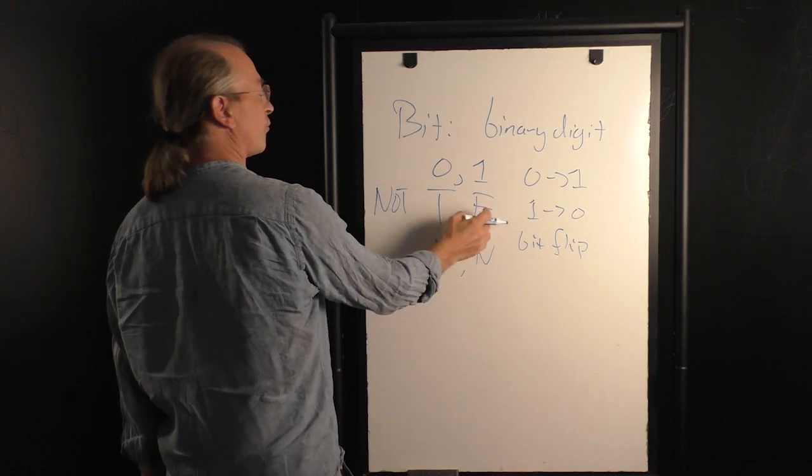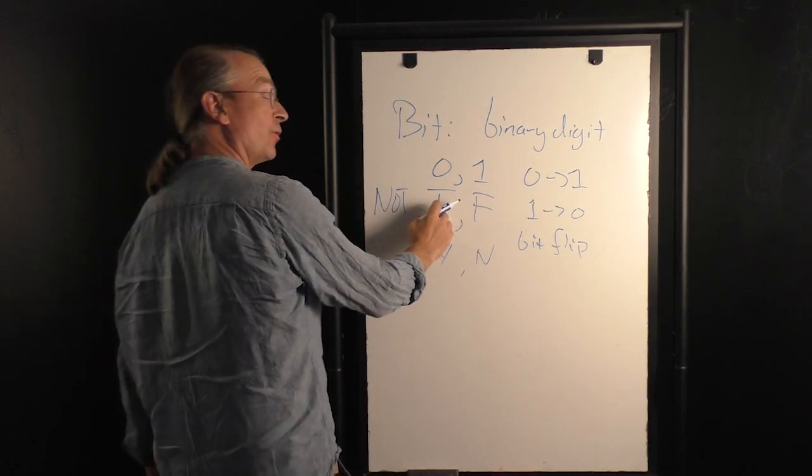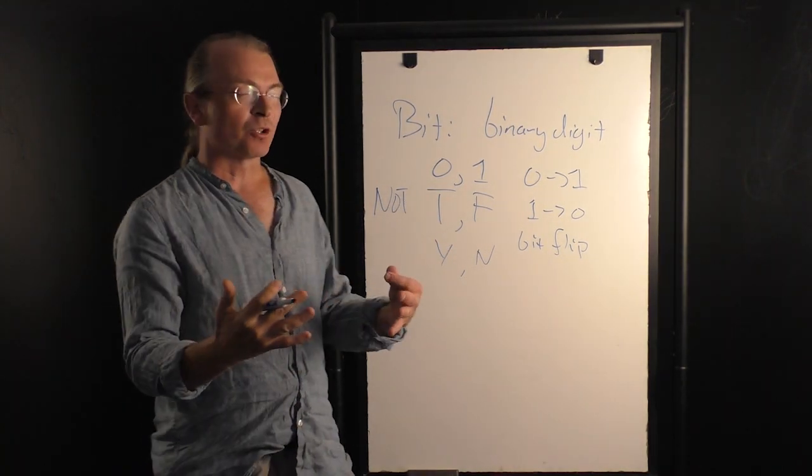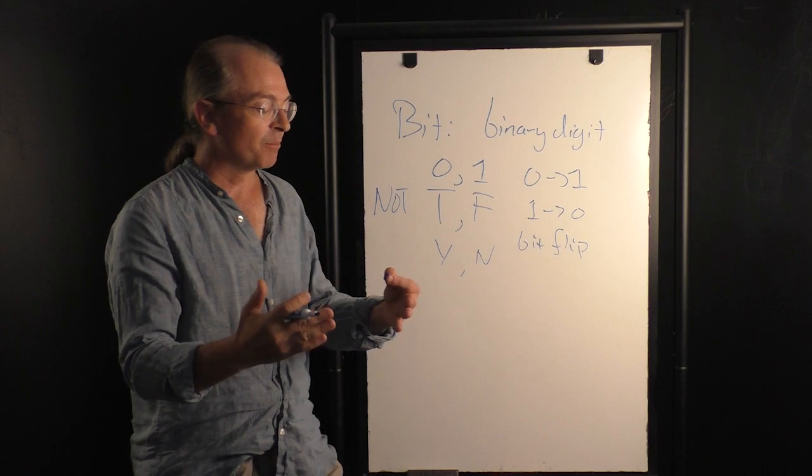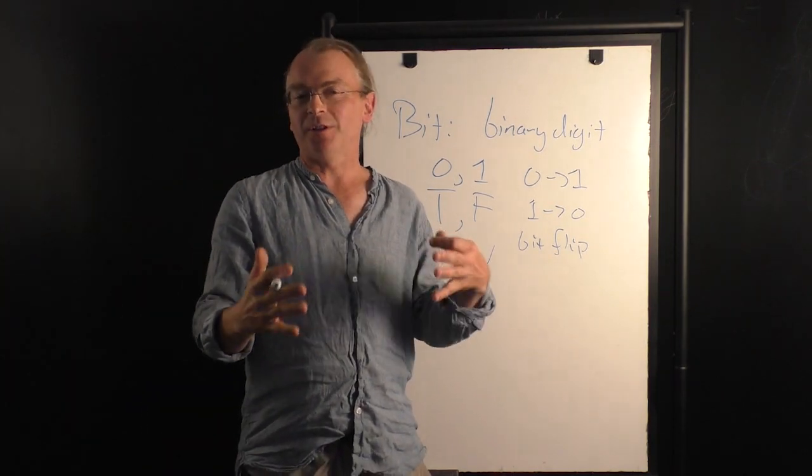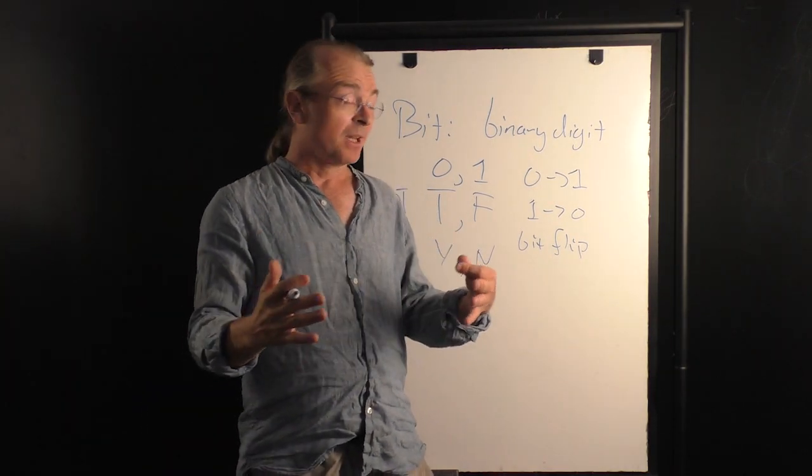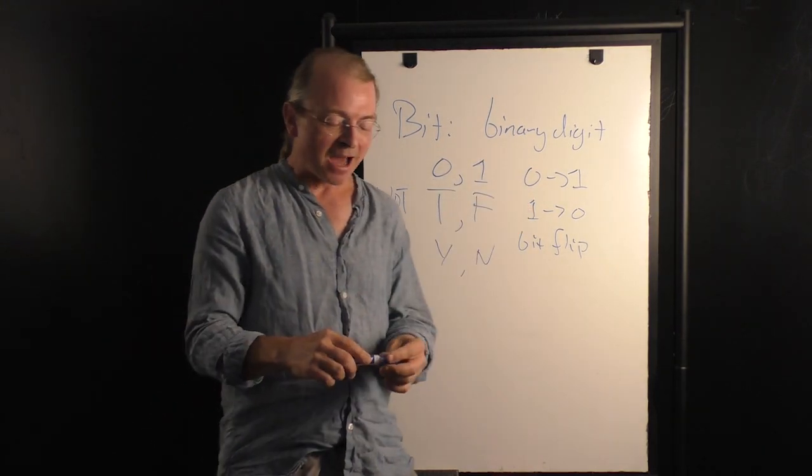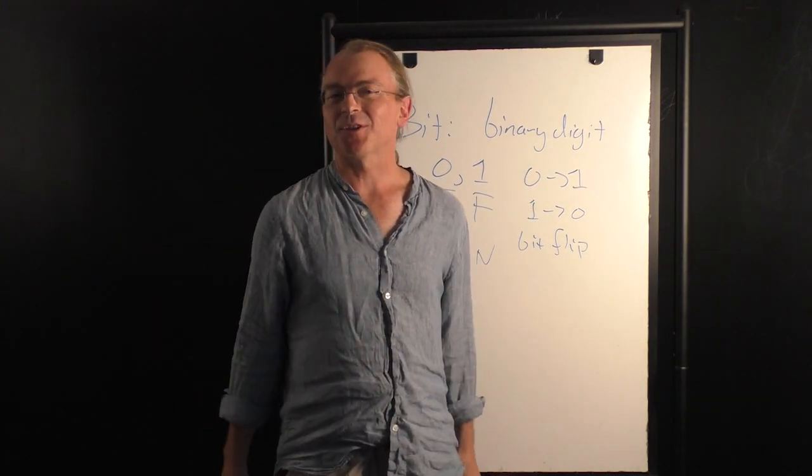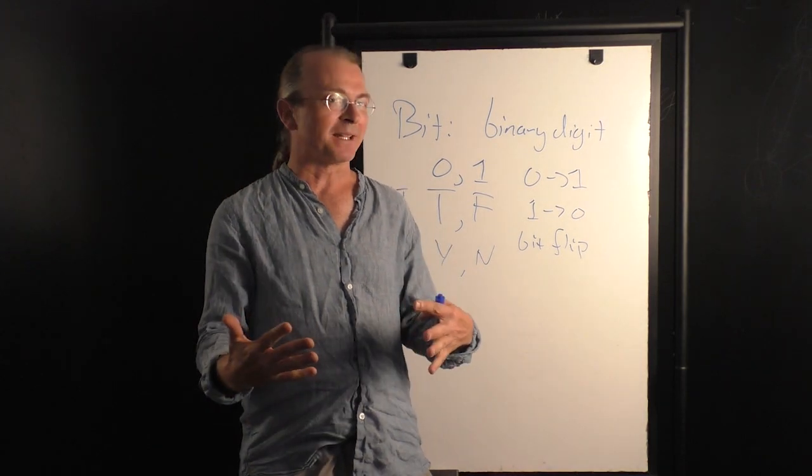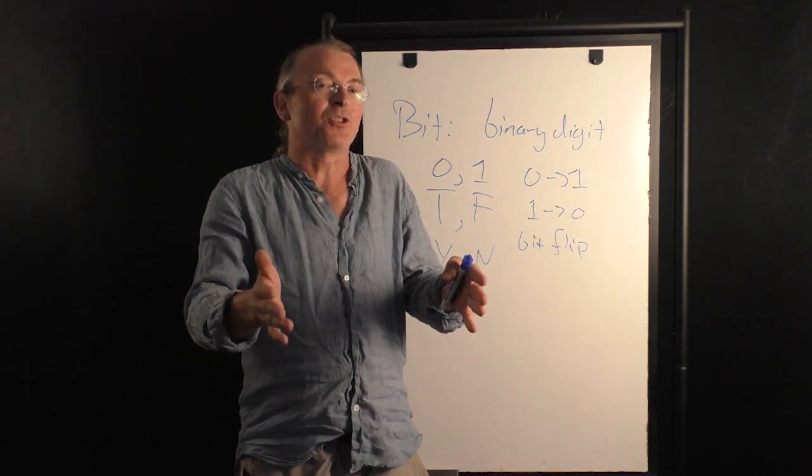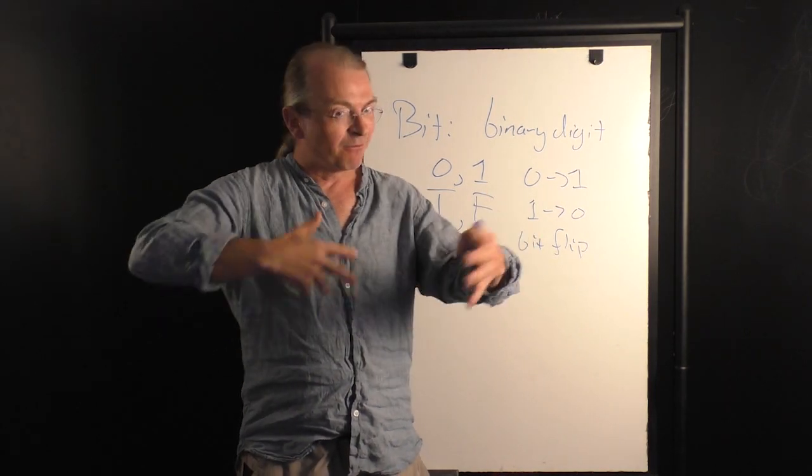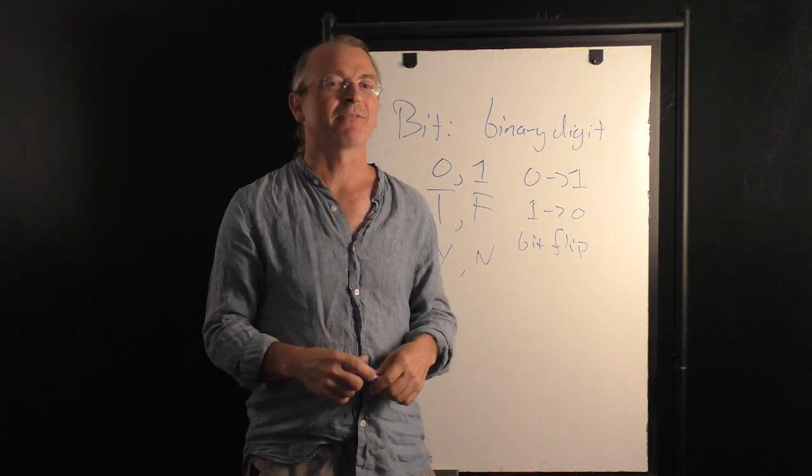So, not true is false. Not false is true. So, if we have this binary notion of information, we can talk both about the fundamental unit of information, the bit, and we can also talk about information processing. And at bottom, this whole information processing revolution that we are participating in comes from breaking information down into its tiniest pieces, bits, and then flipping those bits in a systematic fashion.